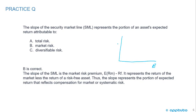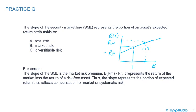Beta is a measurement of systematic risk. On the security market line, the expected return is on the y-axis and beta is on the x-axis. We start at the risk-free rate, with a beta of 1 for the market representing the market risk premium — the slope of the line. So if we calculated the beta of a stock to be 1.5, which is greater than 1, we would calculate the expected return using the CAPM formula: expected return equals the risk-free rate plus beta times the market premium, which is the return of the market minus the risk-free rate.